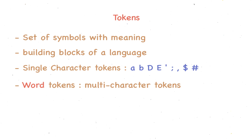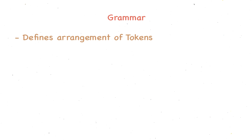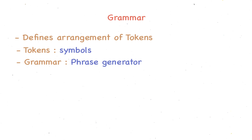In English, a more reasonable example would be to create tokens of different parts of speech. For example, 'boxes' can be a noun token, 'beautiful' can be an adjective token, or 'very' can be an adverb token, and so on. Every language has its own grammar as well. This involves the arrangement of tokens to form something of meaning. If tokens can be described as a set of symbols, then it is the grammar that generates phrases and sentences.